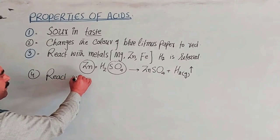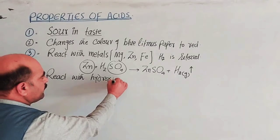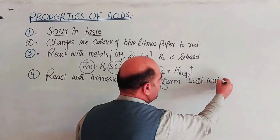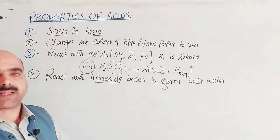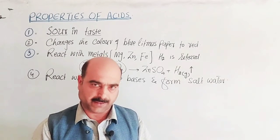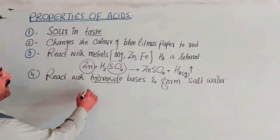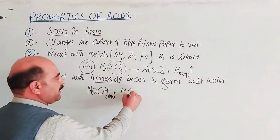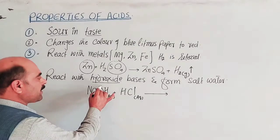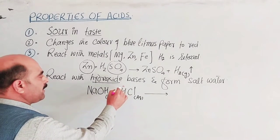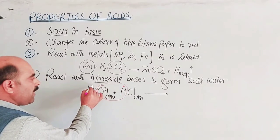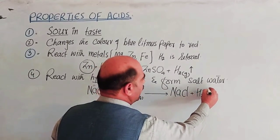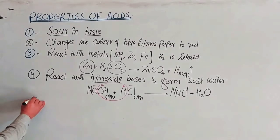Another main property is that acids react with hydroxide bases. They react with hydroxide bases and form salt and water. For example, HCl reacts with sodium hydroxide. The hydrogen ions from the acid combine with the hydroxide ions from the base to form H₂O. The sodium ions combine with chloride ions to form sodium chloride — the salt.